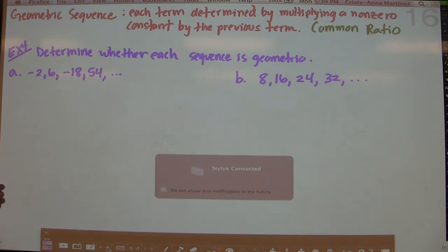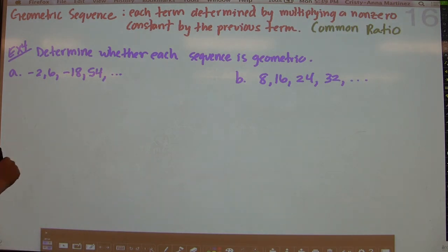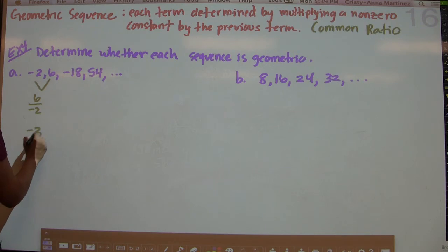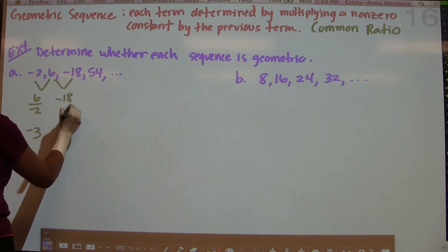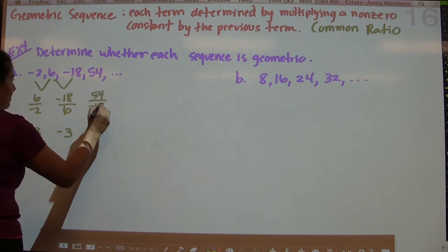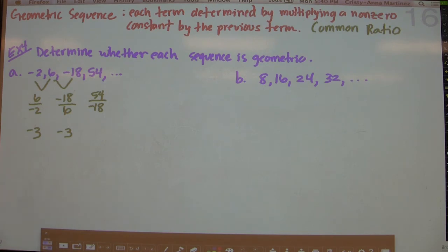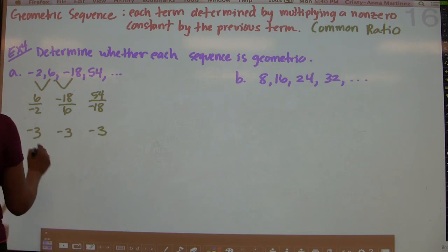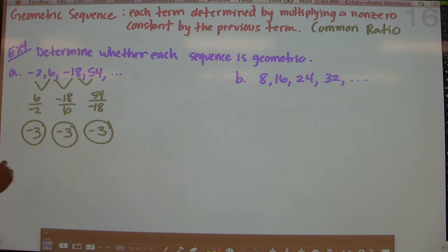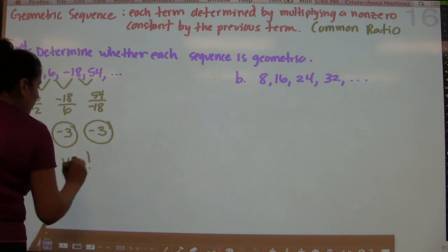Example 4 says: determine whether each sequence is geometric. To do that we divide consecutive terms. We take 6 divided by negative 2, which gives negative 3. Then negative 18 divided by 6, also negative 3. Then 54 divided by negative 18, also negative 3. Because we have a common ratio of negative 3, this is definitely a geometric sequence.